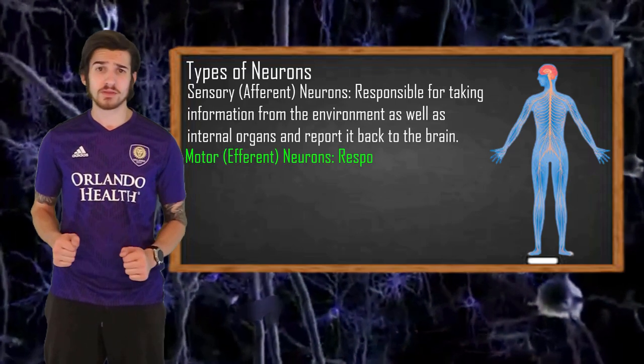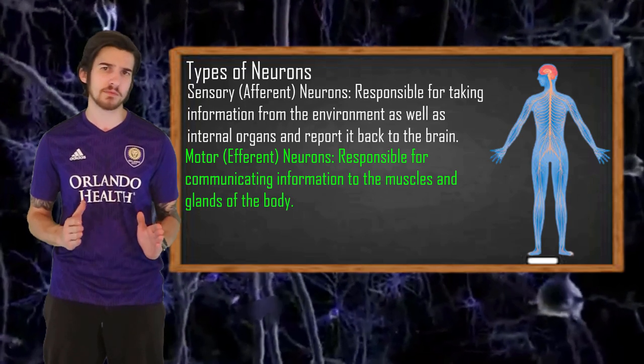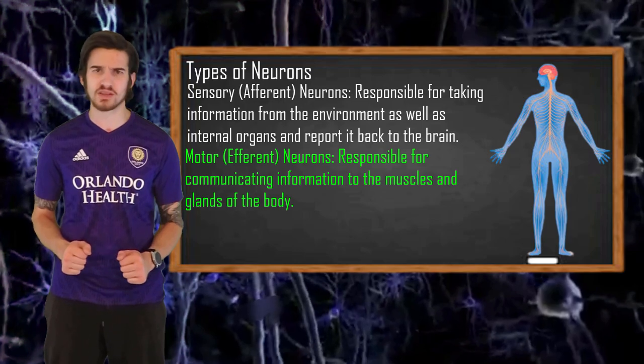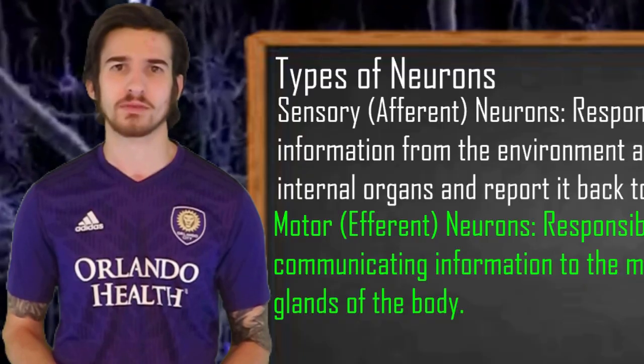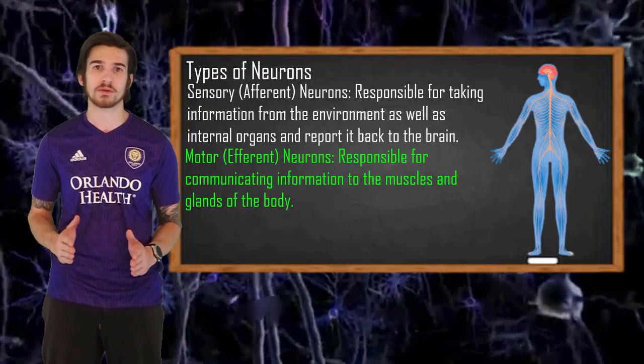Efferent or motor neurons are responsible for communicating information to the muscles and glands of the body and reporting that information back to the brain. A simple act such as blinking activates thousands of motor neurons. Both sensory and motor neurons are part of our peripheral nervous system.